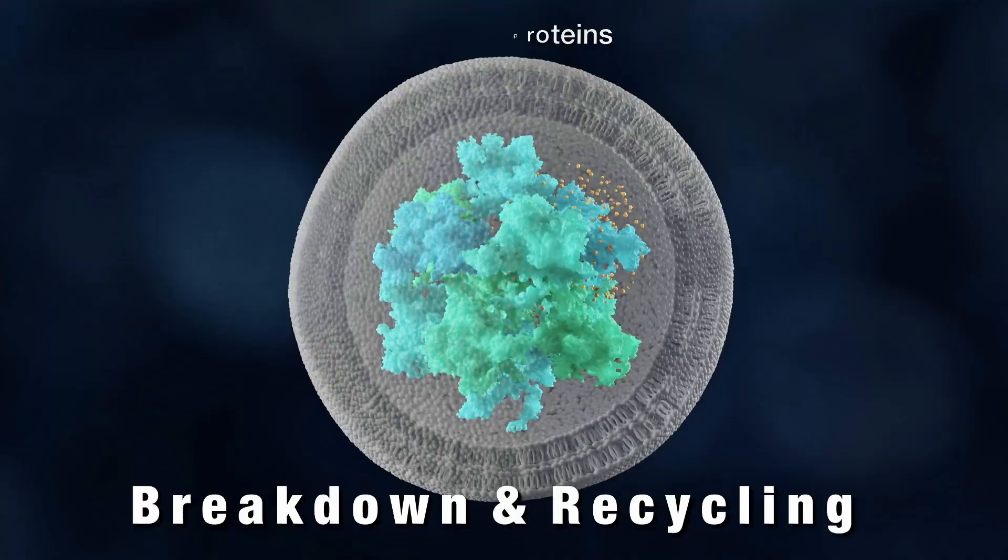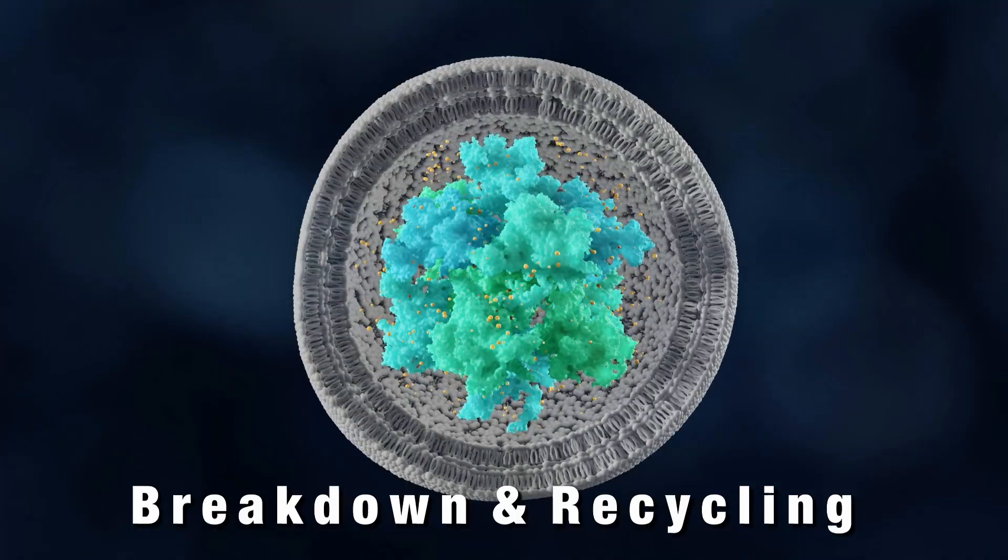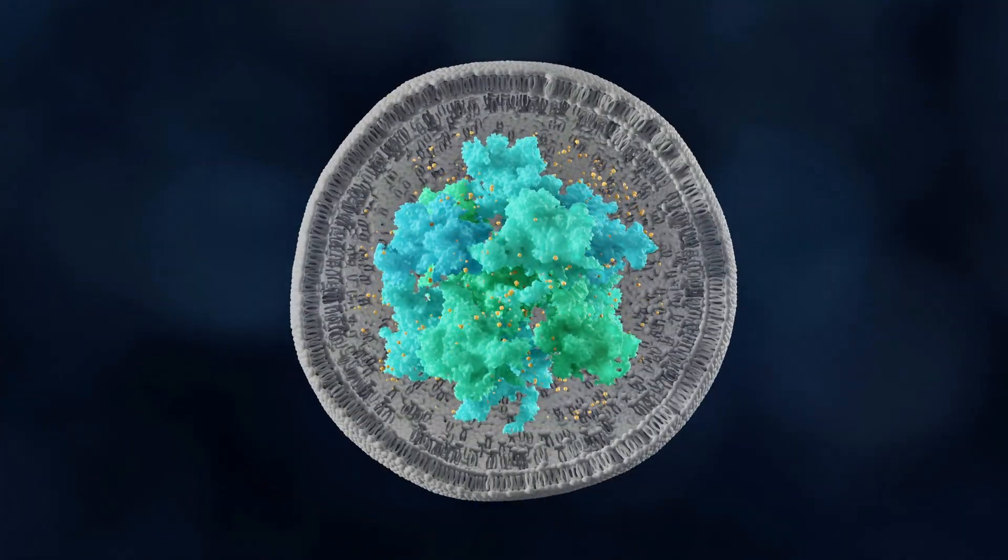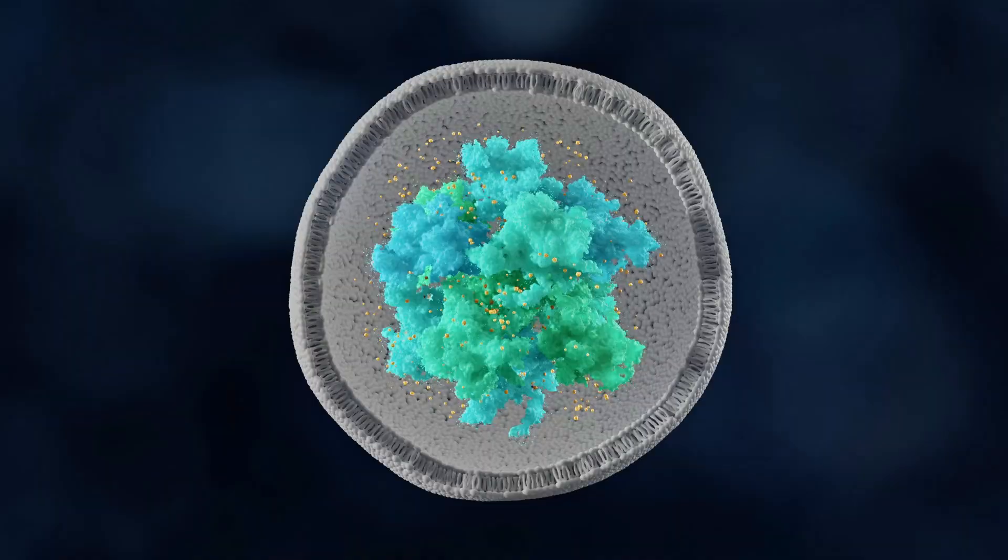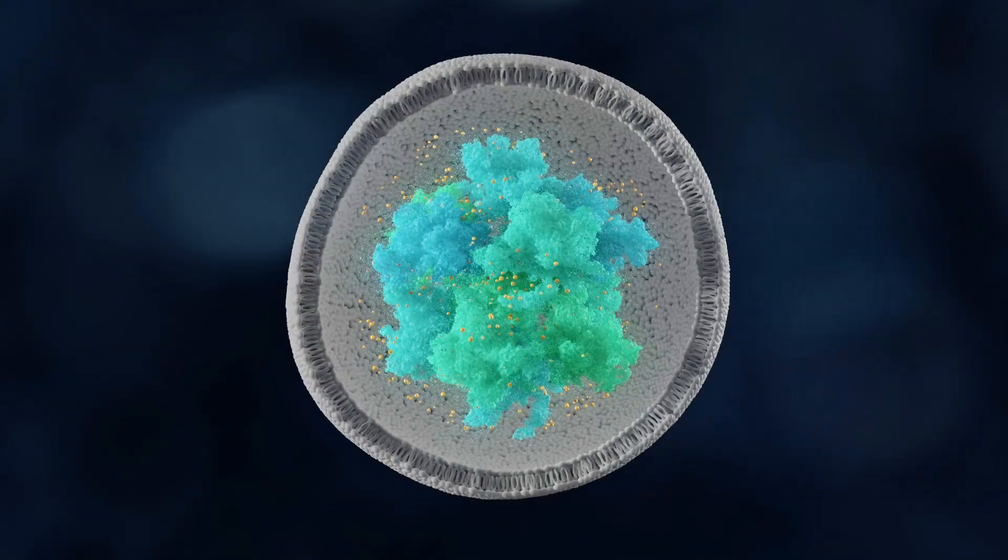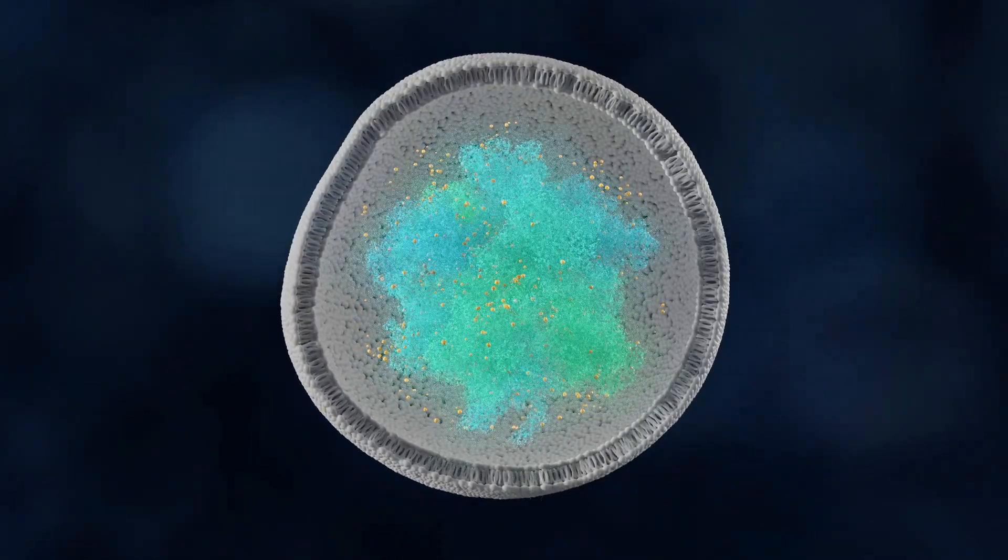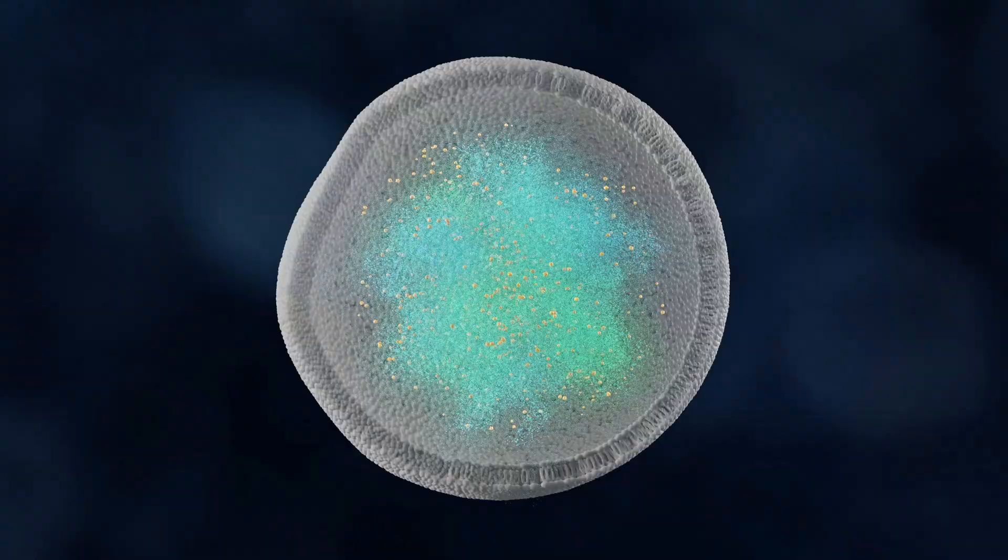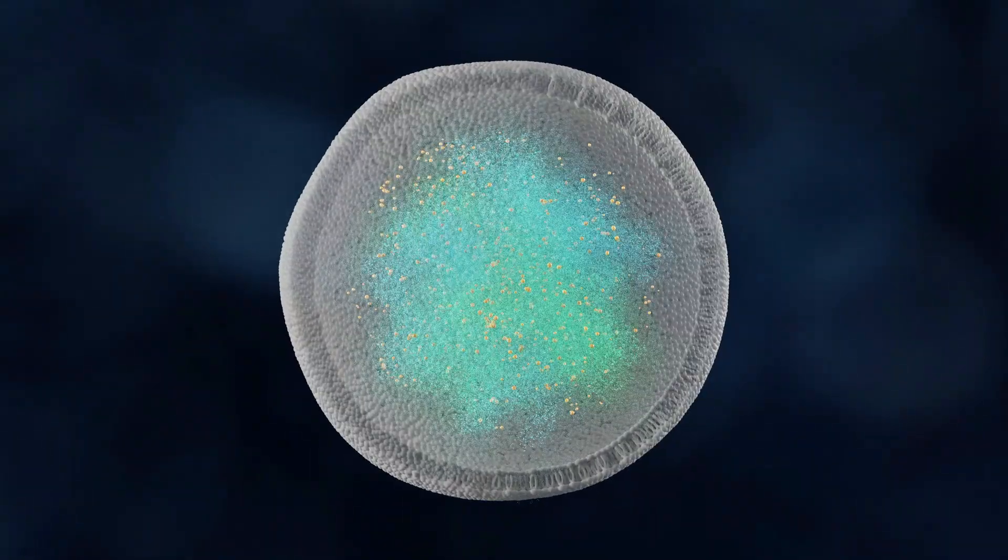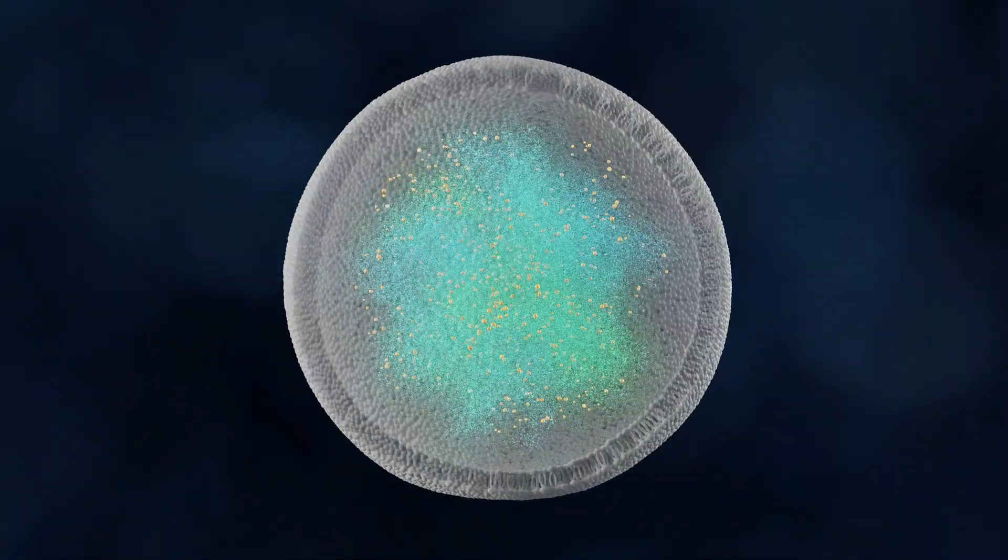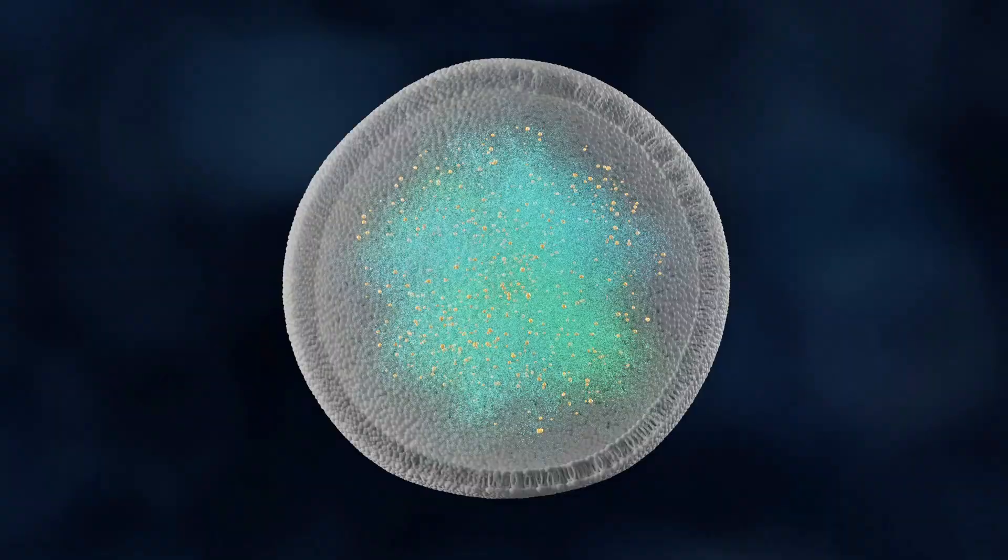The breakdown and recycling step consists in the lysis of the inner autophagosomal membrane and the turnover of the cargo by lysosomal hydrolytic enzymes. This event generates the basic metabolites that are subsequently transported into the cytoplasm for their use as either building blocks for the synthesis of new macromolecules or energy sources.